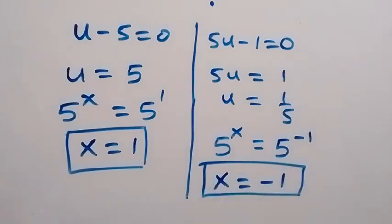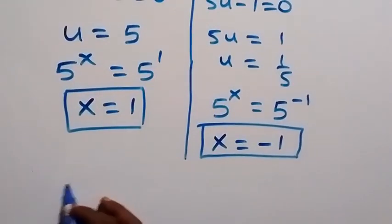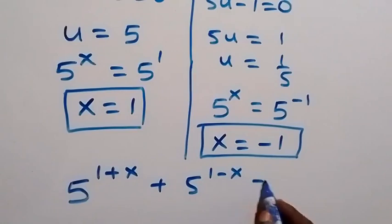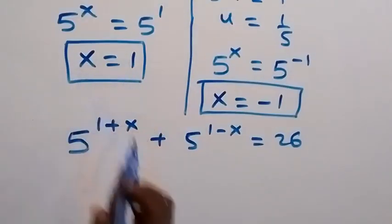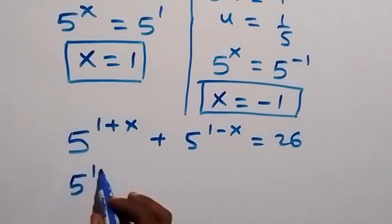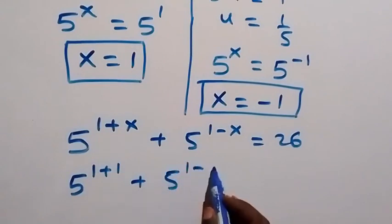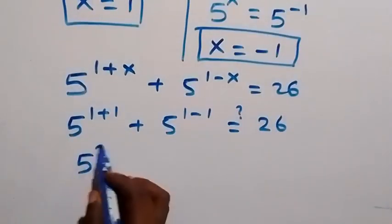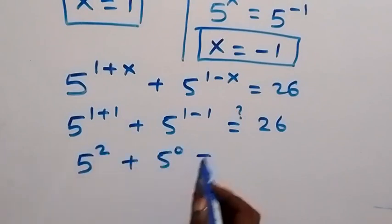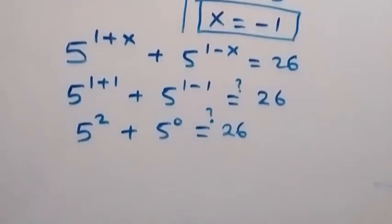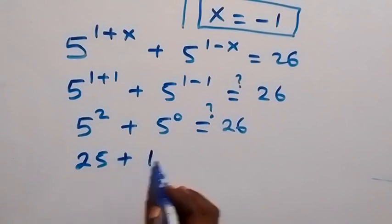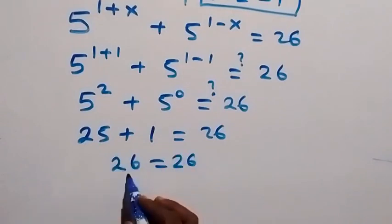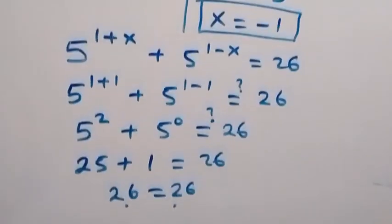So we have x equals to 1, and x equals to minus 1. Let's check by substituting back. We were given 5 raised to the power 1 plus x, plus 5 raised to the power 1 minus x, equals to 26. Substituting x equals to 1: 5 raised to the power 1 plus 1, plus 5 raised to the power 1 minus 1, equals 26. This is 5 squared plus 5 raised to the power 0, which is 25 plus 1, equals 26. Left hand side equals right hand side — x equals to 1 satisfies this equation.